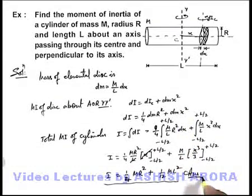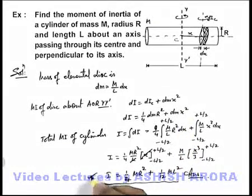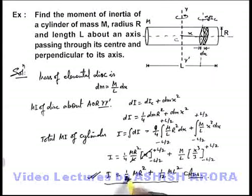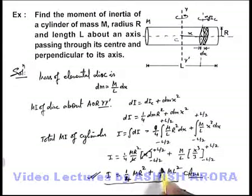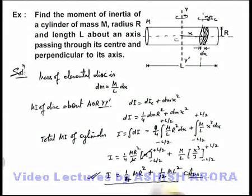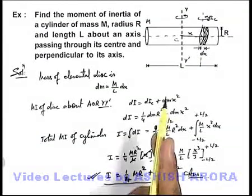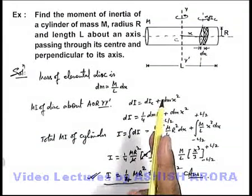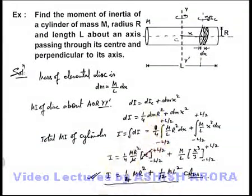That completes the problem. You can also keep the result at your fingertips: I = (1/4)mr² + (1/12)ml², as a standard result for this situation of a cylinder.